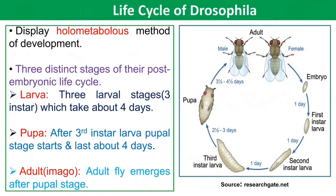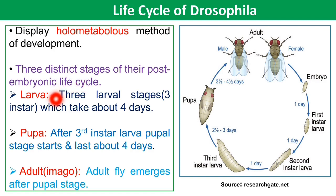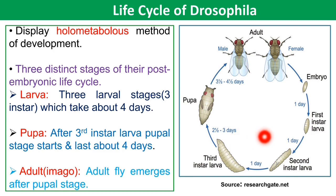Drosophila displays holometabolous development, that is, it undergoes complete metamorphosis. Three distinct post-embryonic lifecycle stages are larvae, pupa, and adult. There are three larval stages: first instar, second instar, and third instar larva, which takes about four days. After the third instar larva, the pupal stage starts, and finally the adult fly emerges from the pupal stage.